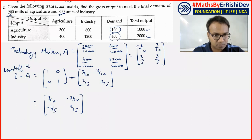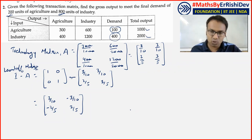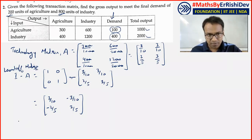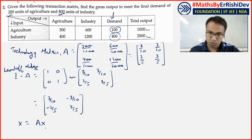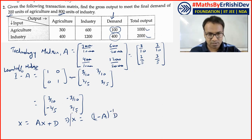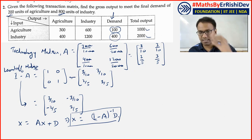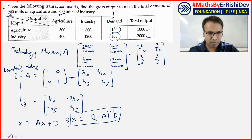I minus A is what we call the Leontief matrix. From the last class, gross output X equals technology matrix A times gross output plus external demand D. So X equals (I-A) inverse into D. To find the inverse, we first need the determinant of I minus A.